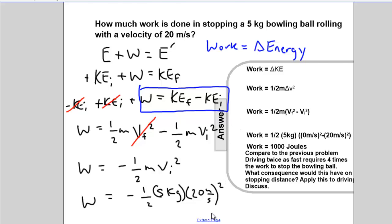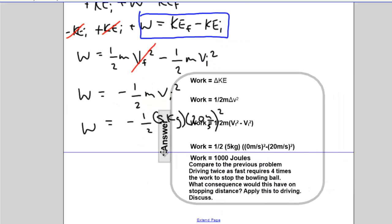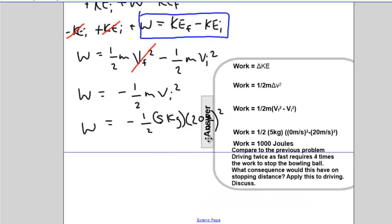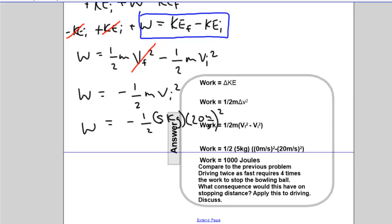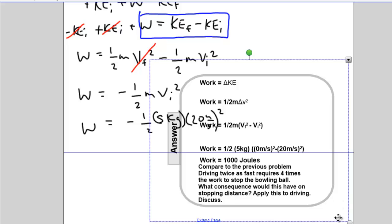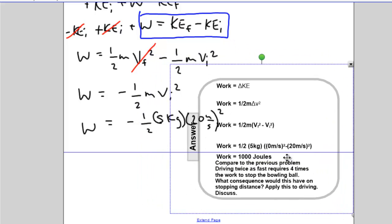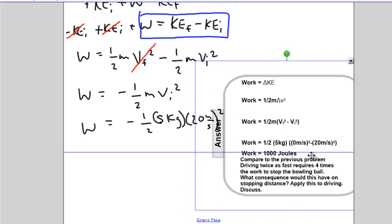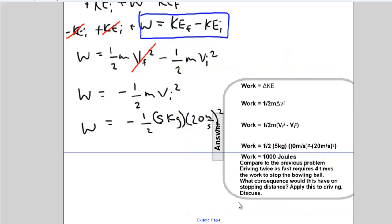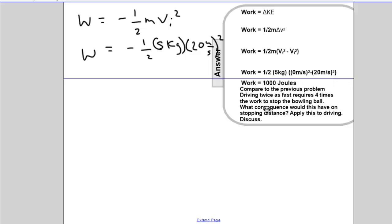If we were driving, let's scoot down here and take a look at this. This is an extension. If we were driving down the road and you were driving twice as fast, it would require you four times the work to stop the bowling ball. What is the consequences of driving and your stopping distance? Can we apply this? And this is an extension. This goes beyond the problem.